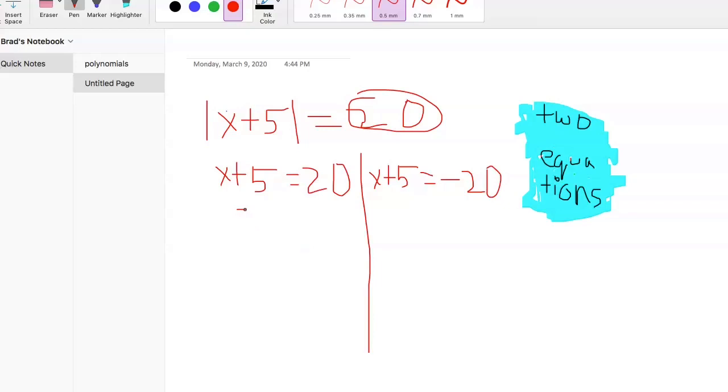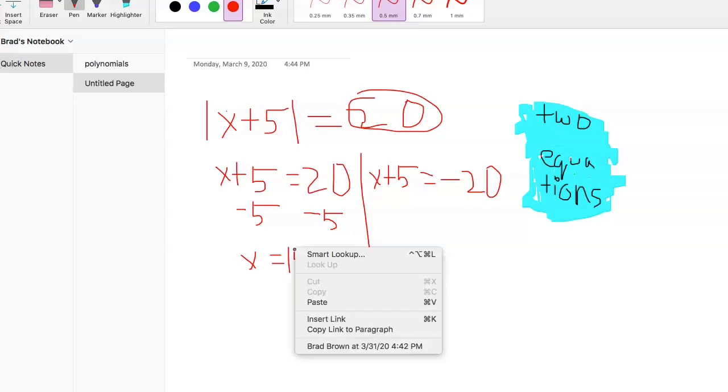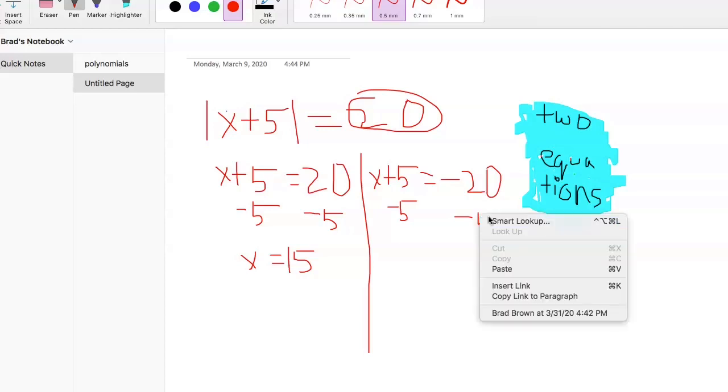And then we just solve for it, solve for both of them. Subtract 5. So 20 minus 5 is 15, x is 15, that's one of our solutions. And then we'll subtract 5 over here again. And remember that when we have a negative, so negative 20 minus 5 is negative 25. That's our solution. So we have two solutions: one is x equals 15, two is x equals negative 25.